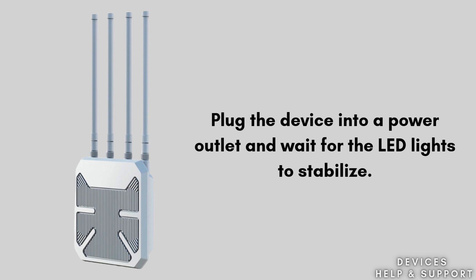Place the Wavlink AX3000 in a suitable location, preferably outdoors, where it can extend your Wi-Fi signal effectively. Power on the device by plugging it into a power outlet and wait for the LED lights to stabilize.